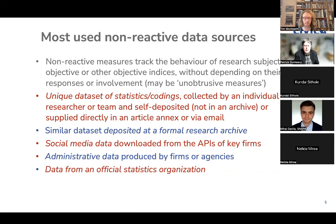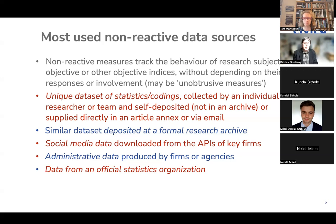The second type of data is non-reactive data. Non-reactive data measures track the behavior of research subjects in objective terms, or use other indices that are fixed and don't depend on the responses or involvement of research subjects. This is a very potent and fast-growing area of work. Most of the social sciences are moving away from reactive measures and towards using more non-reactive data sources, some of which may be what are called unobtrusive measures — though not all non-reactive measures are unobtrusive. Sometimes people know they're being observed, but their behavior is not strictly dependent on their involvement.